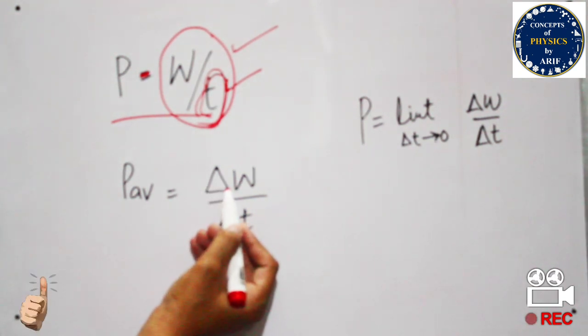And in addition, if we want to calculate or define the average power, it is also known as the change in work with respect to a small interval of time. If a small interval of work or small portion of work is done with a small interval of time, we can say that it is average power.